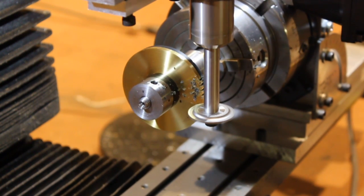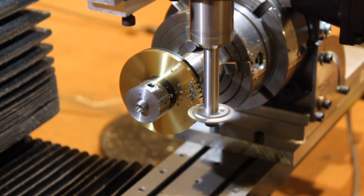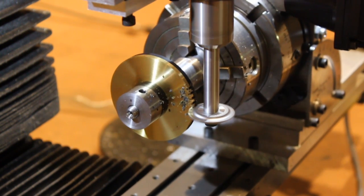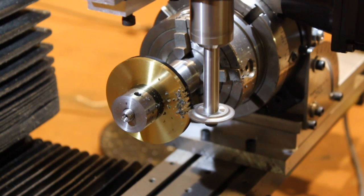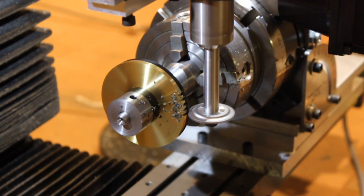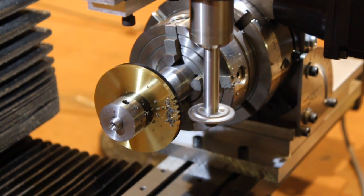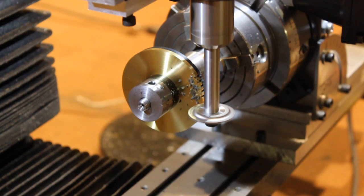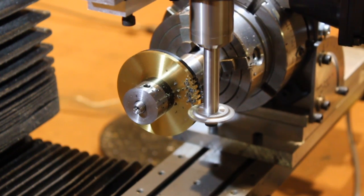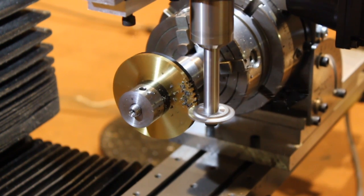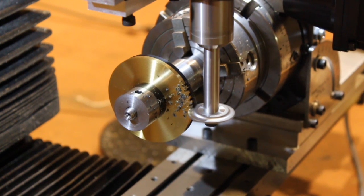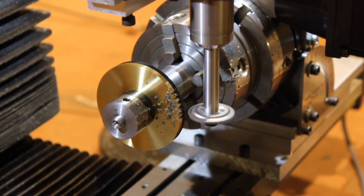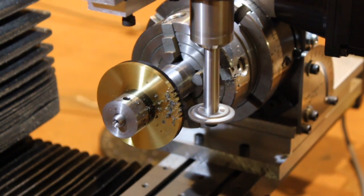Now, because this was a trial run, if you will, I've only got one gear blank mounted in the arbor. But once I'm sure that this is working, when I make the rest of the gears, if I have a batch of gears to make, I can mount multiple gear blanks on the arbor and then just cut them all at once.